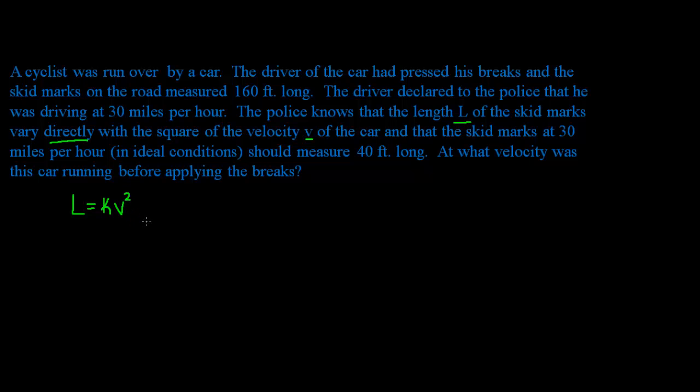And now in order to create a mathematical model, I need to find K. So they give us some information. It says here that the skid marks at 30 miles an hour, that's the velocity, should measure 40 feet long. So that's the length. I'm going to plug in these values into this equation here. And I'm going to write 40 is equal to K and V is 30 squared. And that equals K times 900.